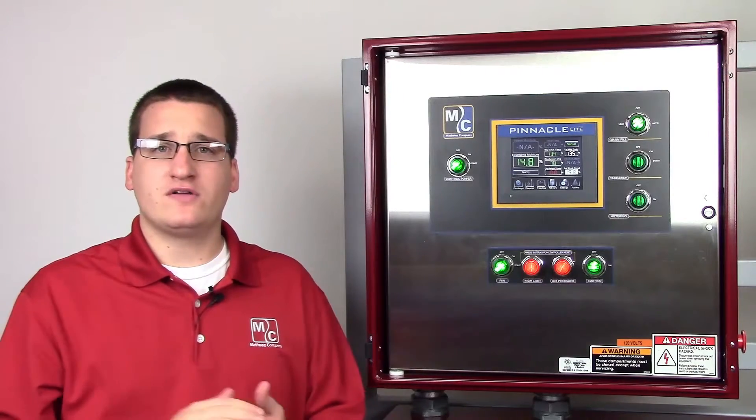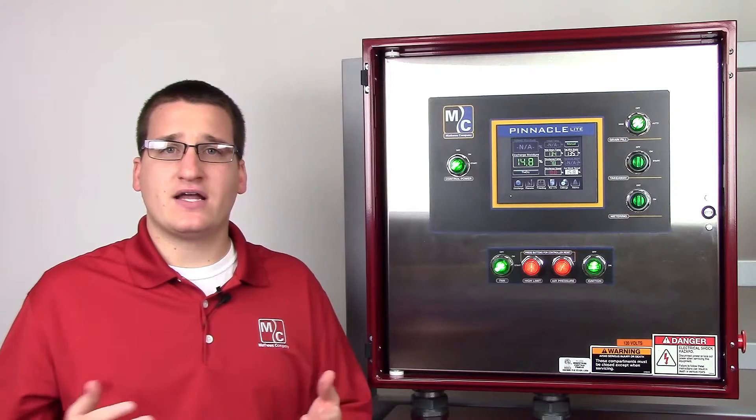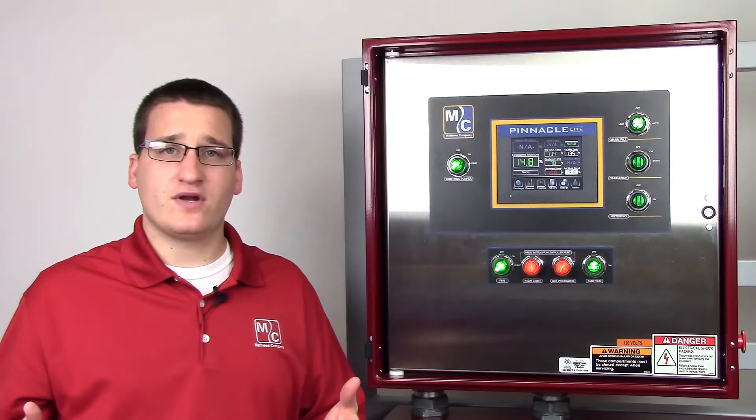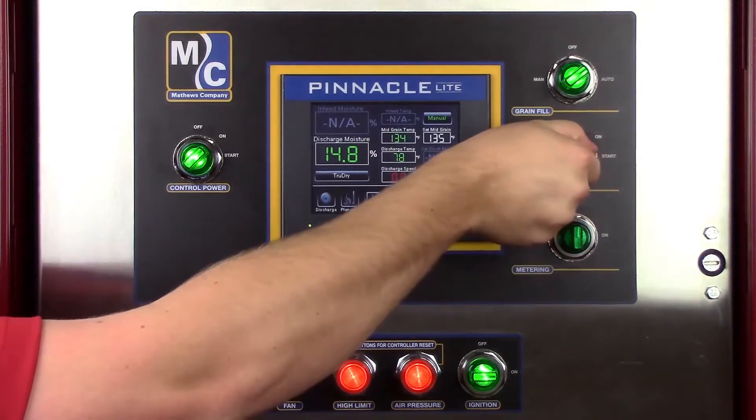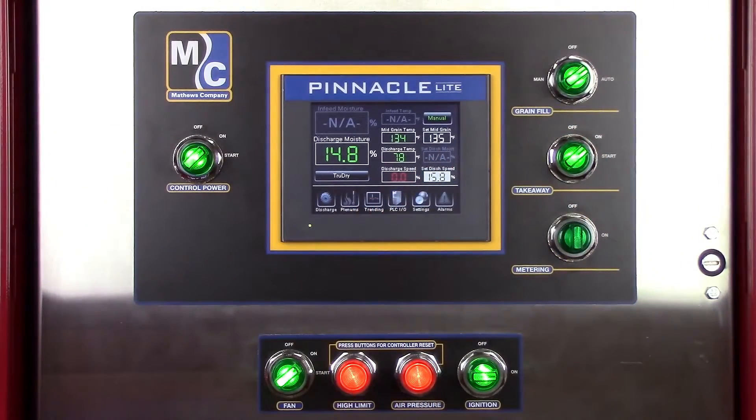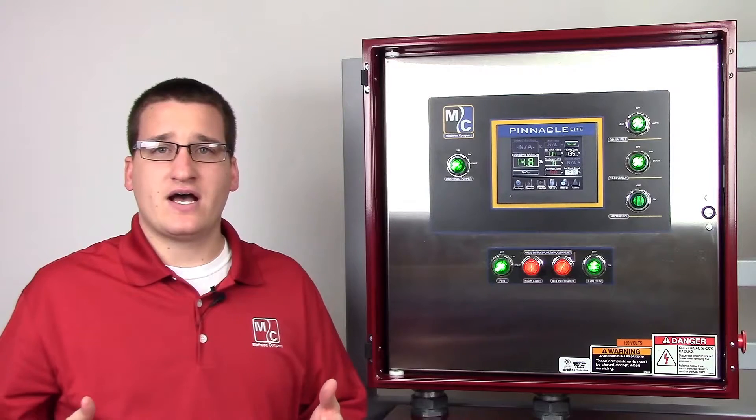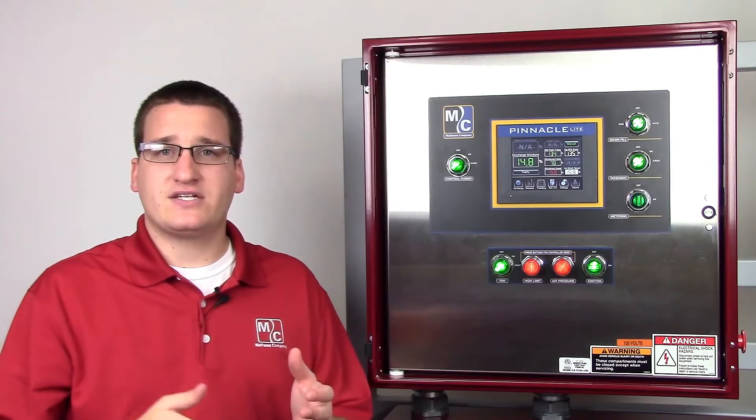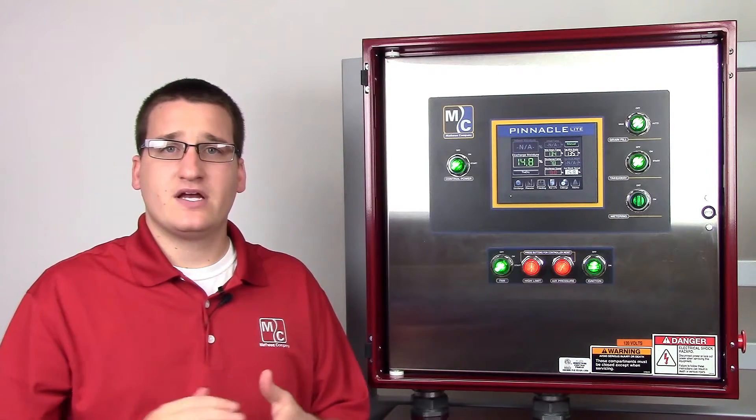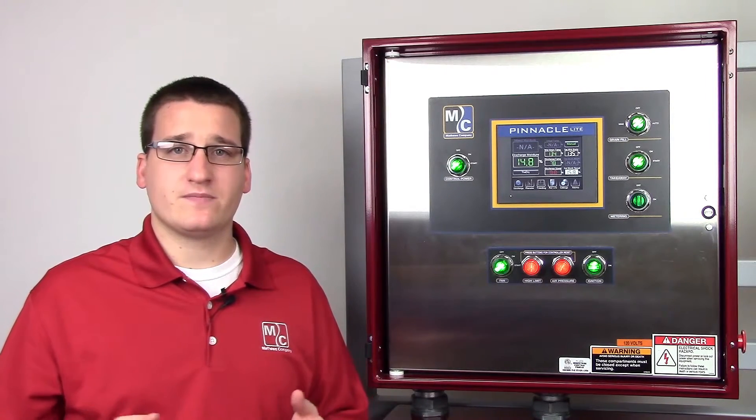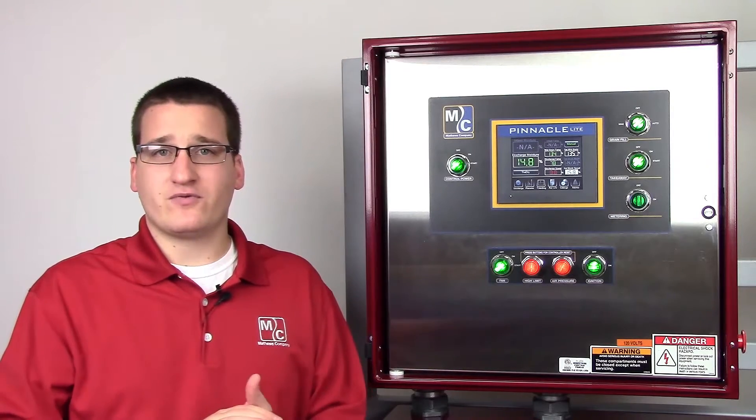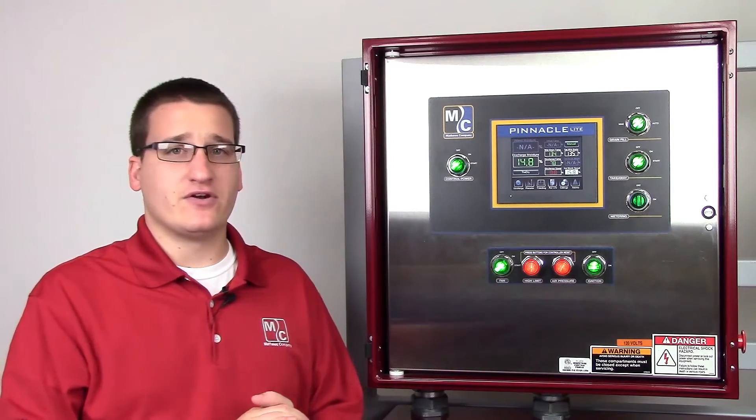Once you're happy with all of these values, you can turn on the takeaway by turning the takeaway switch to the start position. This will turn on any third party equipment attached to the outlet of the dryer. Depending on what equipment is attached, it may take some time to ramp up to speed. Once the equipment is up and running, you can turn on the metering.